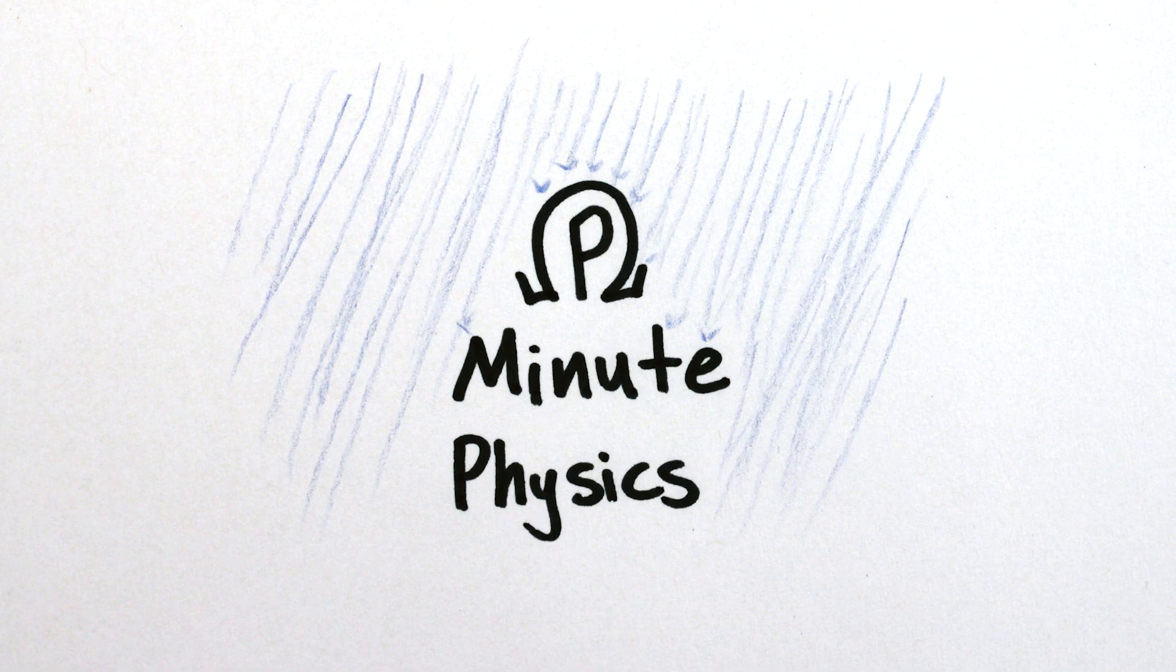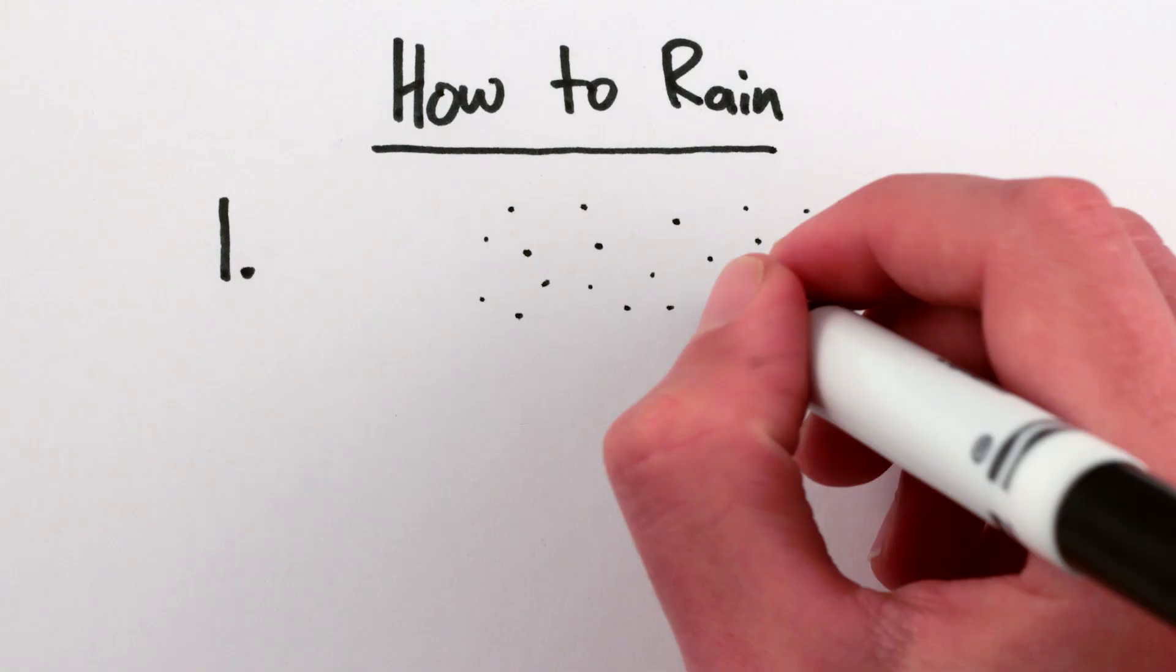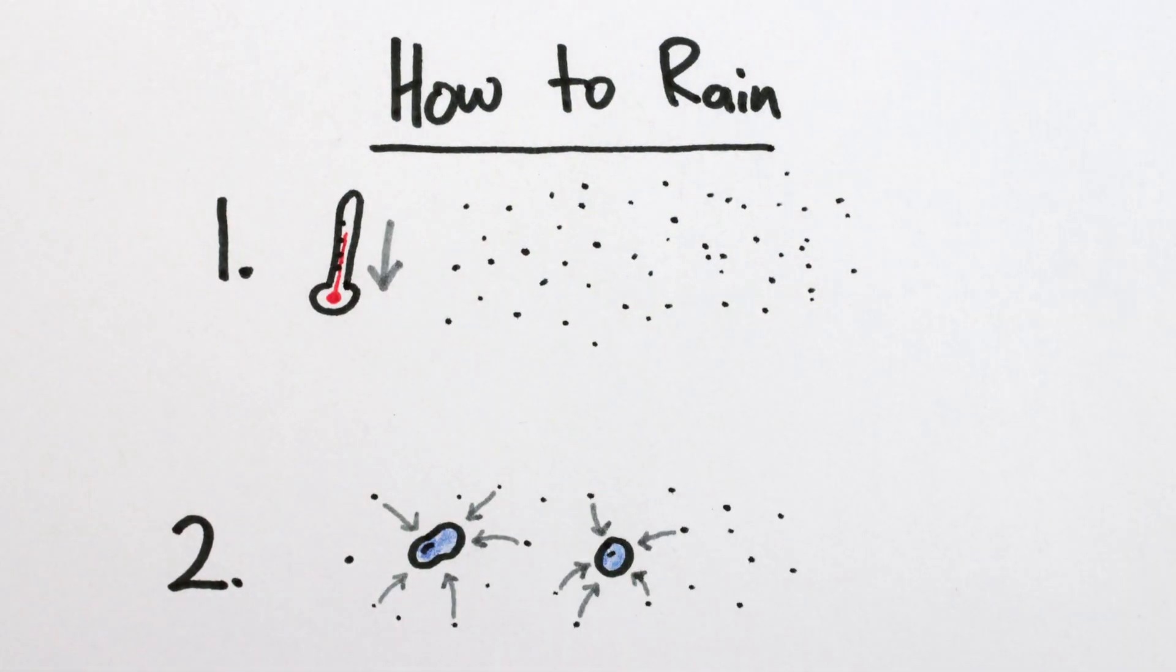But perhaps the most fascinating is the physics that makes raindrops impossible. You might think making a raindrop is easy, just cool water vapor in the air past its condensation point and it condenses into liquid droplets, right?